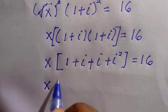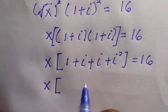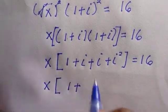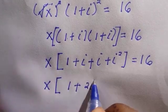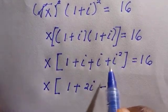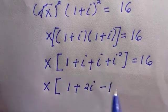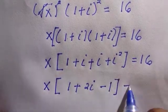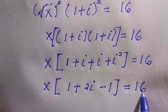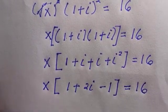Plus i multiply by 1, that is i, plus i multiply by i, that is i square, equals 16. The next thing is, if this is x bracket, so the first one is 1 plus, this is 2i, i plus i.